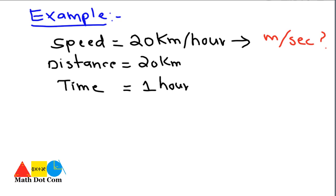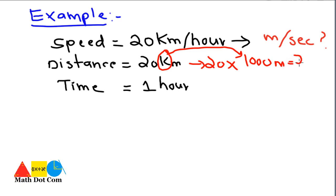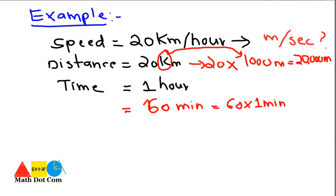To convert the speed, keep the conversions in mind. When converting kilometers to meters, replace 'kilo' with 1000 — so 20 kilometers becomes 20,000 meters. For the time, one hour equals 60 minutes, and one minute equals 60 seconds, so one hour equals 3600 seconds. This is how we convert the time from hours to seconds.